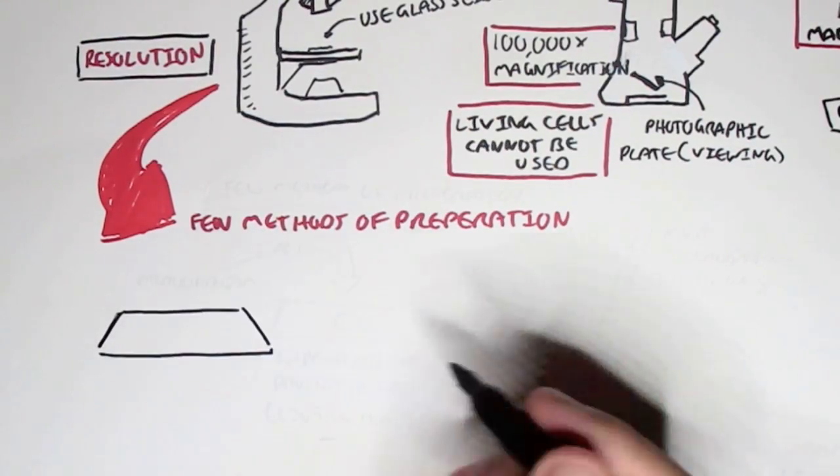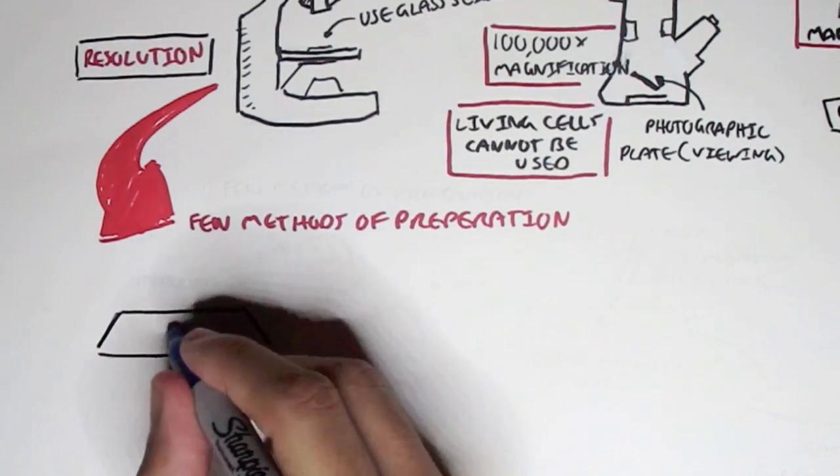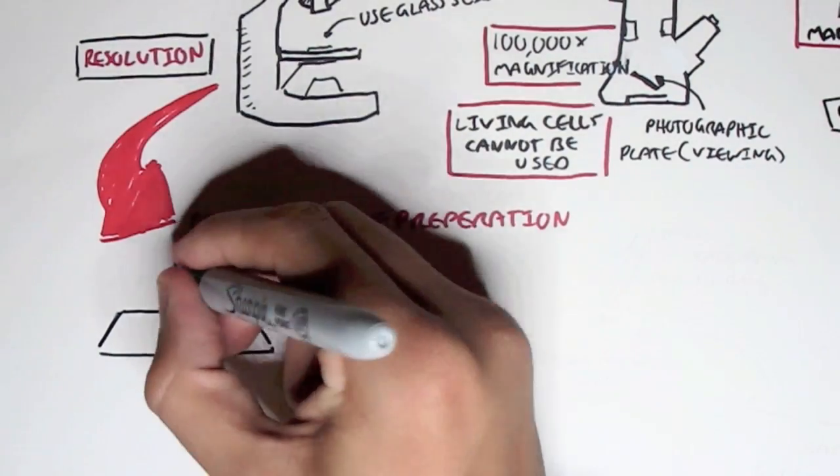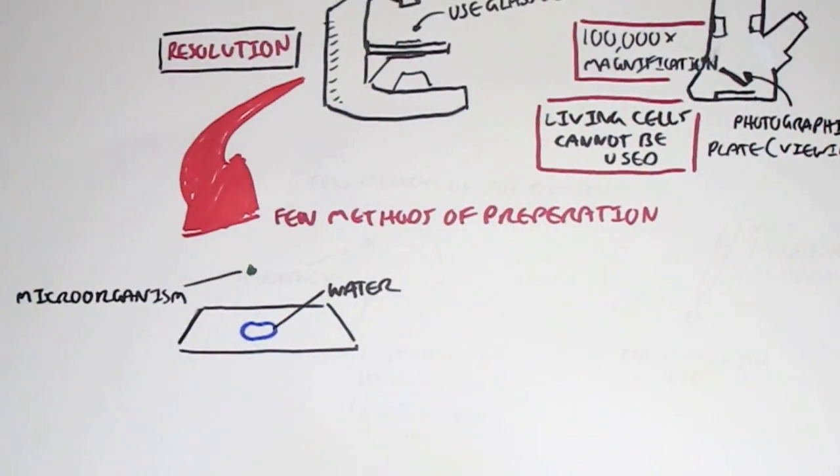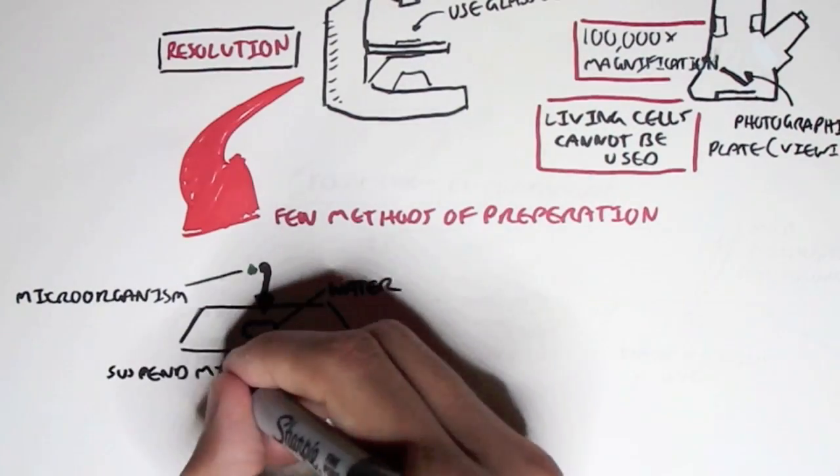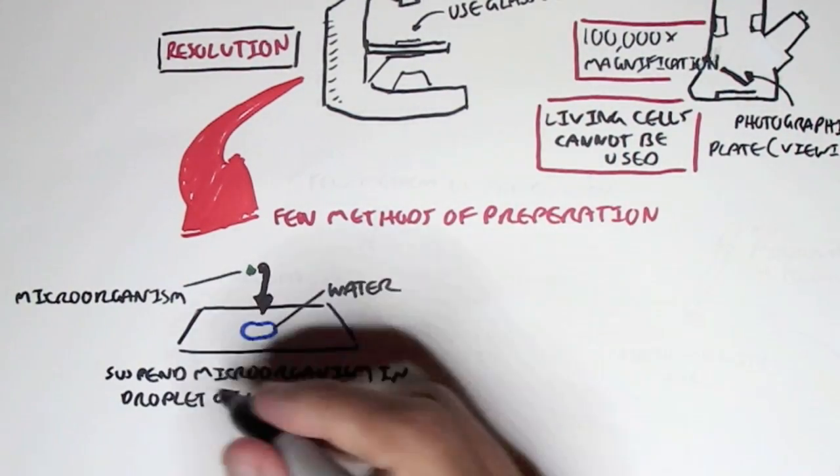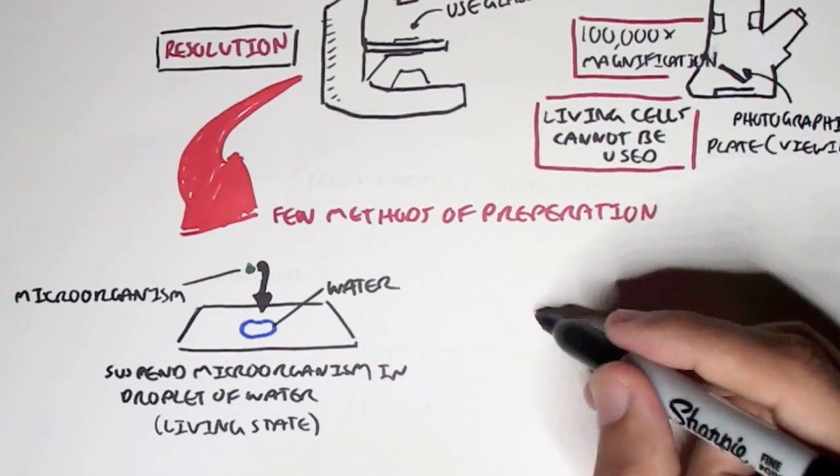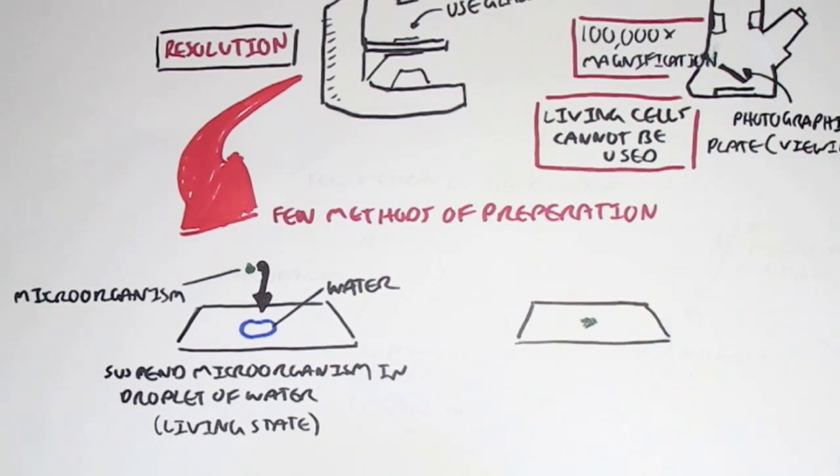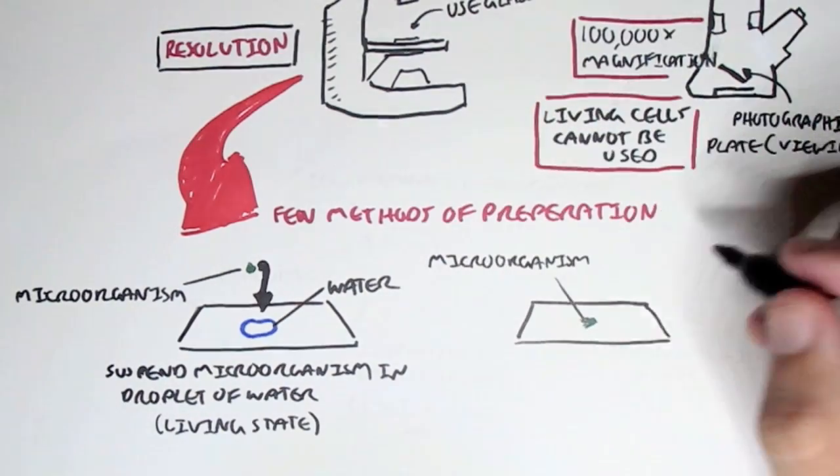So now let's look at some methods of preparation. We're concentrating on the Compound Light Microscope, typically. And the main type of preparation method is that we can suspend the microorganisms in a droplet of water. And so we can view it in a living state, for example, the movement.